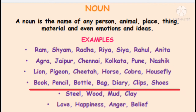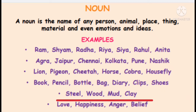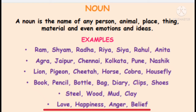Book, Pencil, Bottle, Bag, Diary, Clip, Shoes — these are names of things. Steel, Wood, Mud, Clay — these are names of materials. Love, Happiness, Anger, Belief, Kindness — these are names of emotions.